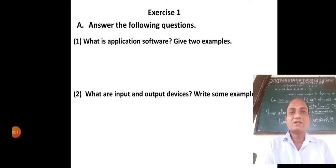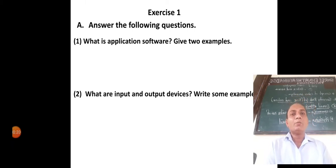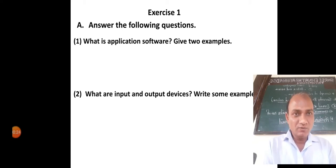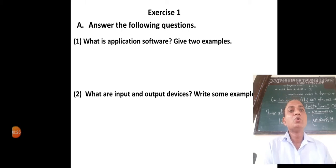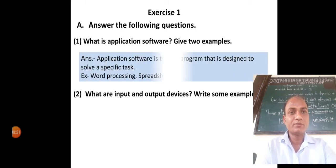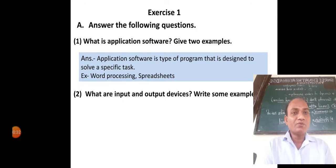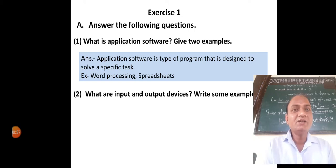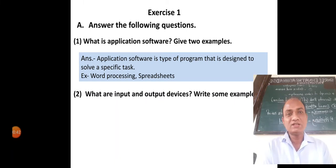The first question: answer the following questions. Question one — what is application software? Give two examples of application software. Application software is the type of program that is designed to solve a specific task. For example, word processing and spreadsheet.